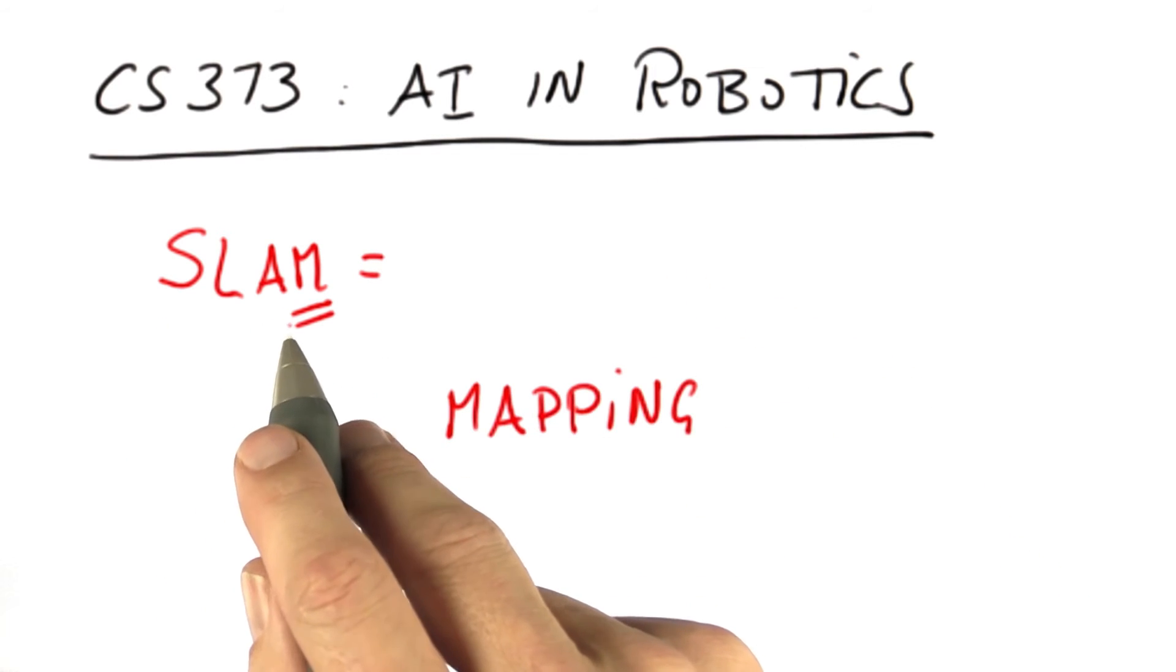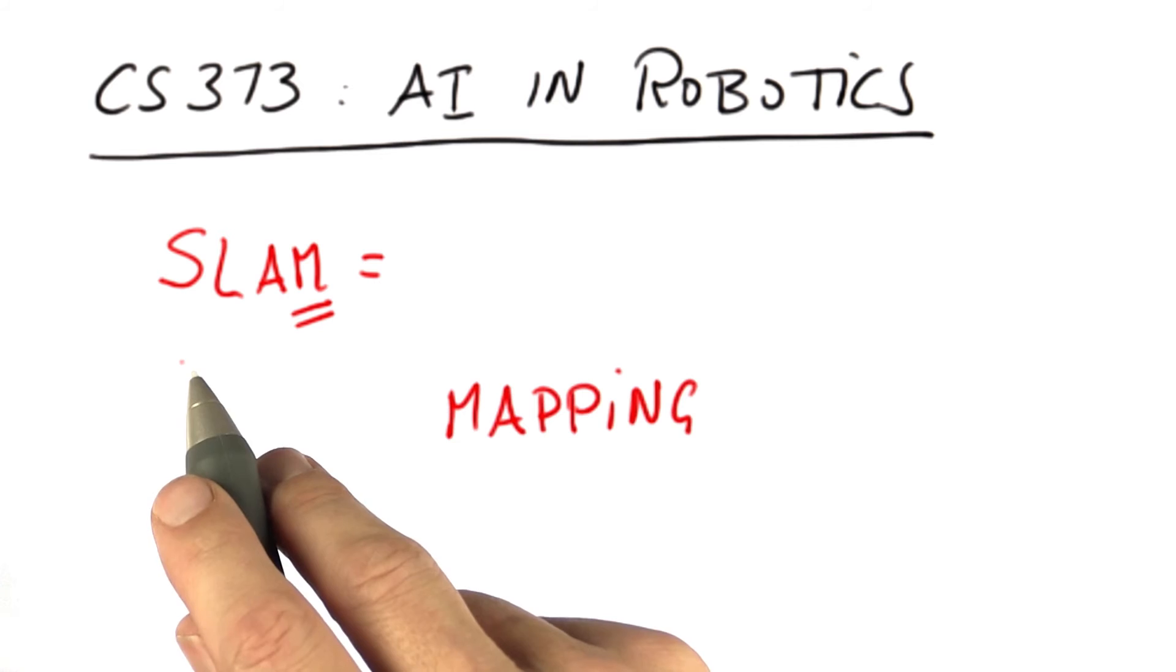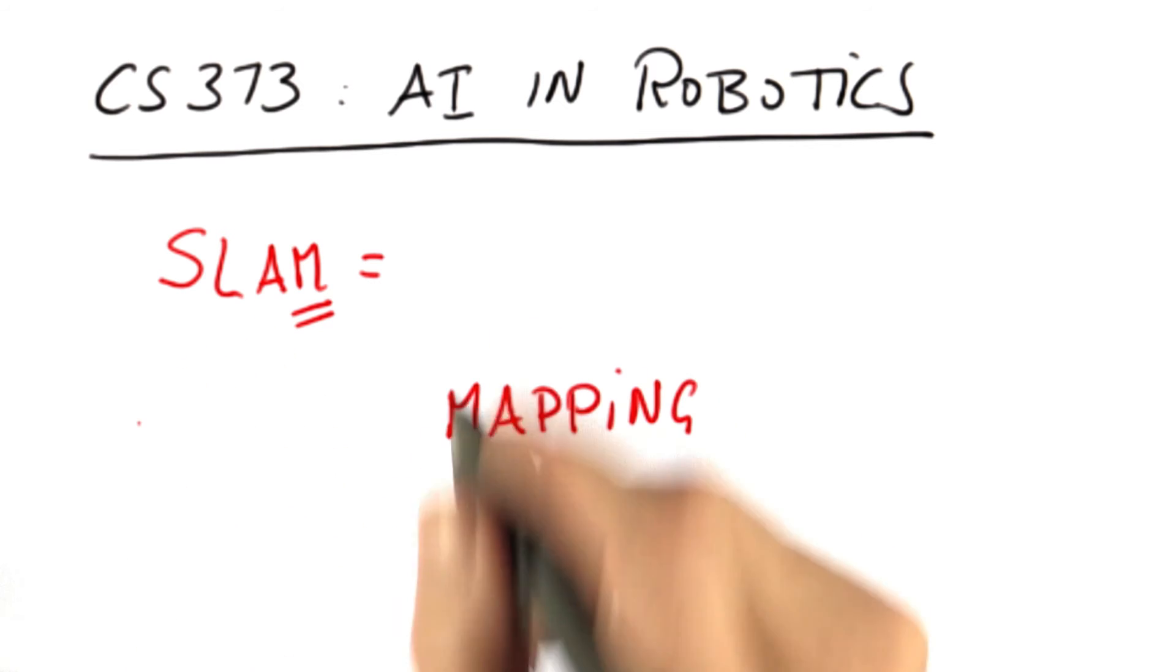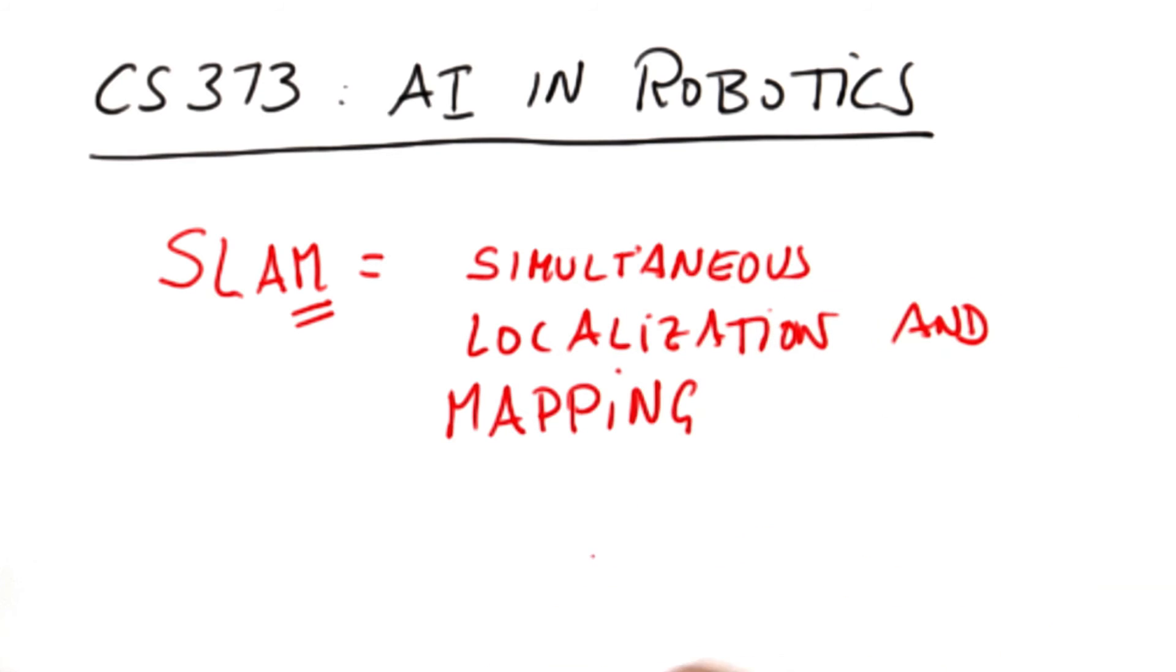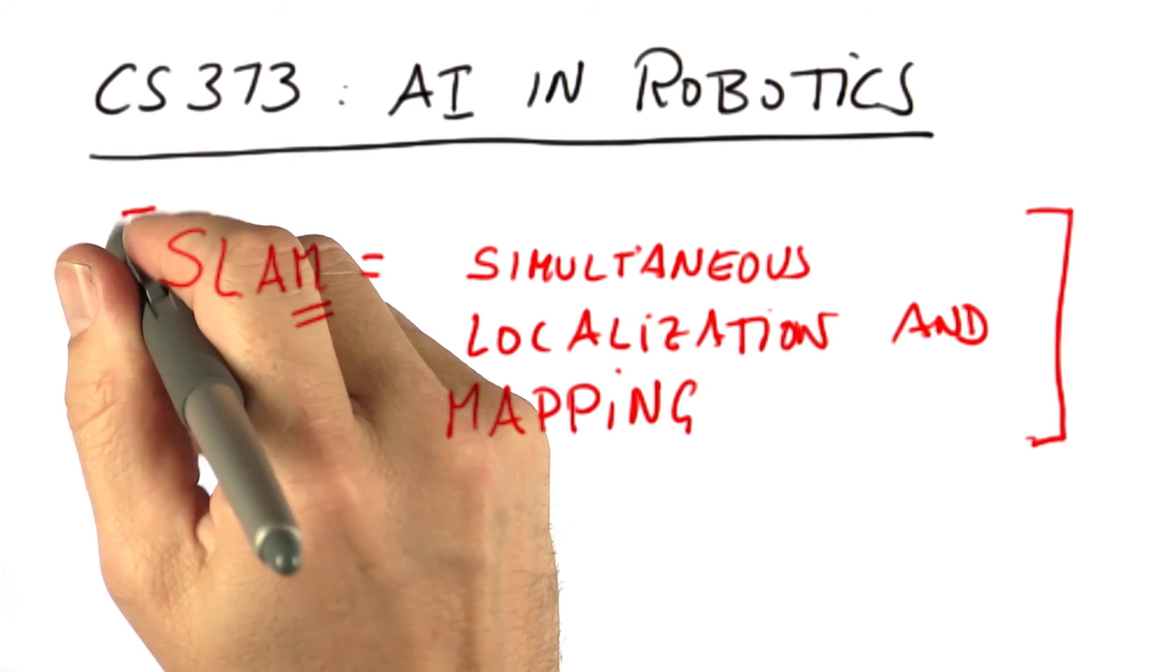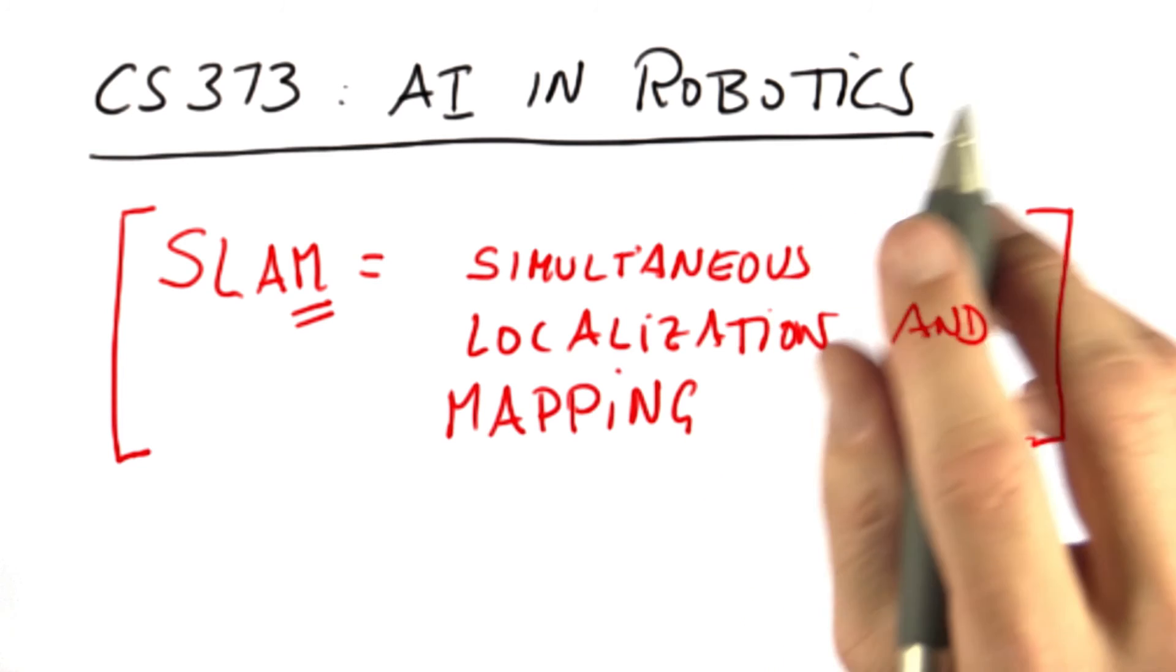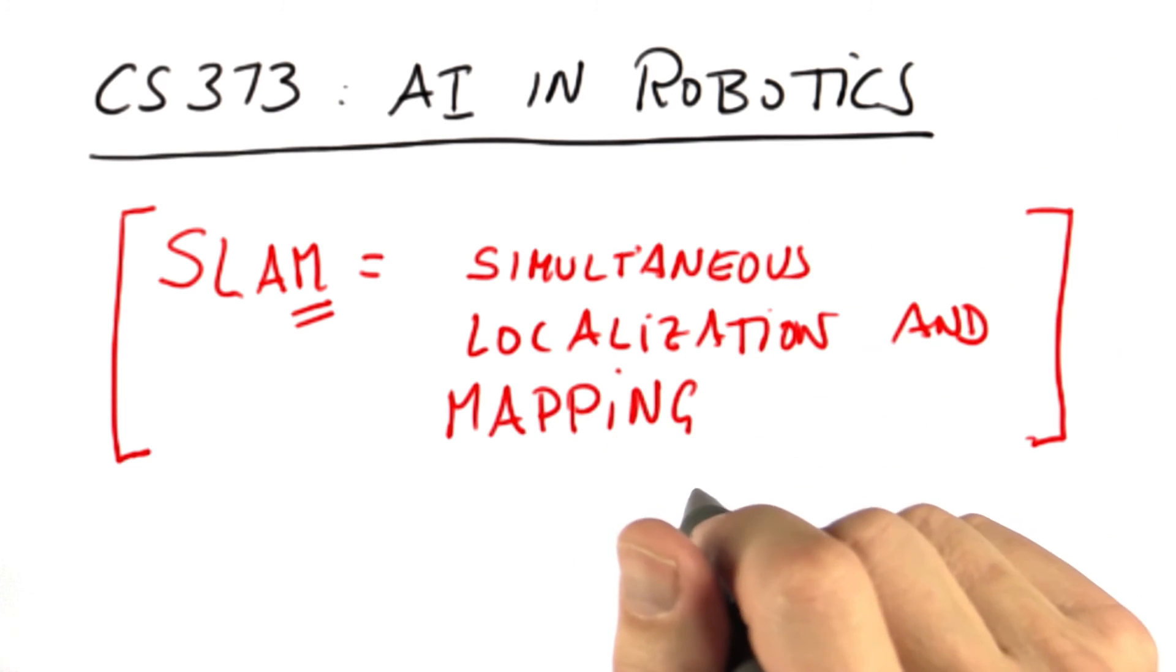That's why SLAM comes into play. SLAM doesn't stand for slamming a robot. What it really means is simultaneous localization and mapping. This is a big research field.